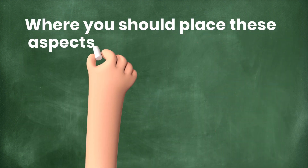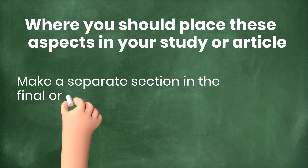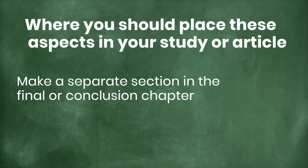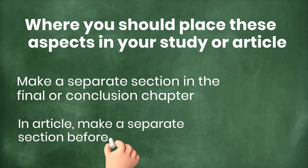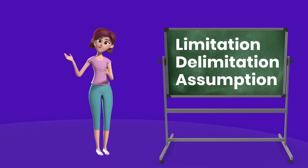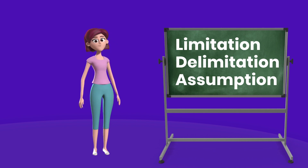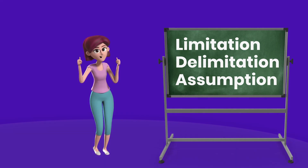It is also important to know where we should write these aspects. Make a separate section about limitations in the final or conclusion chapter of your thesis, or if you are writing an article, make a separate section before the conclusion. For delimitations, a suitable place is after the introduction or statement of the problem. I hope you are now able to differentiate between these interrelated concepts which are not similar to each other. Thank you.